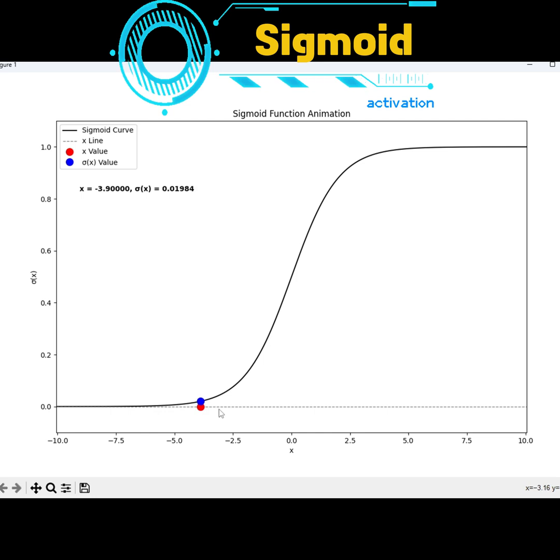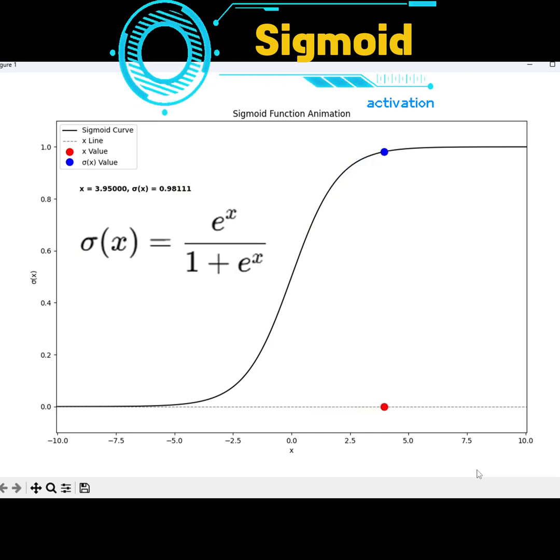The value of x moves along the x-axis. As the red circle moves, the blue circle follows, showing the corresponding value of σ(x) or sigmoid of x. The sigmoid function is calculated as e^x divided by 1 + e^x. This results in an S-shaped curve that's commonly used to convert outputs into probabilities.